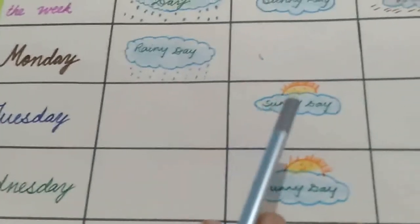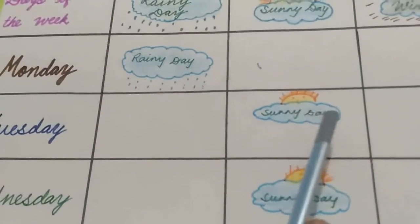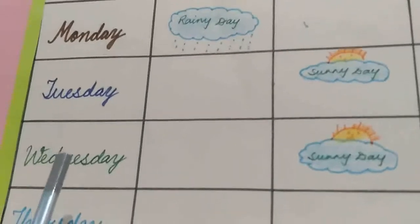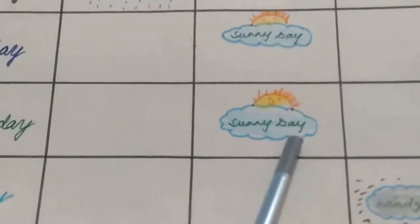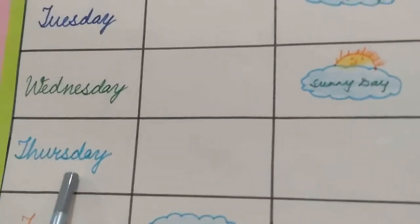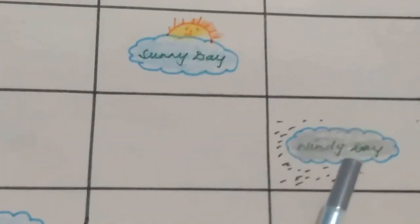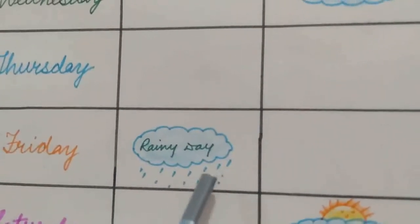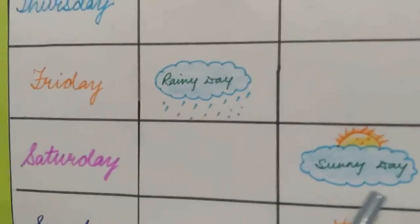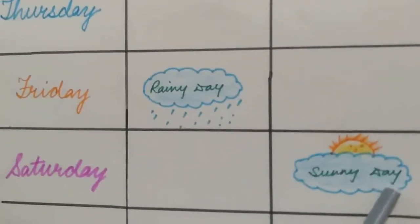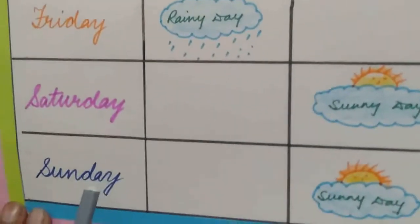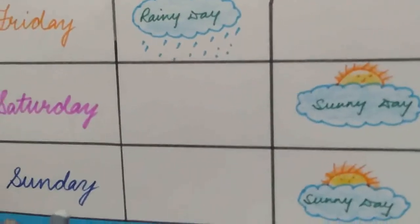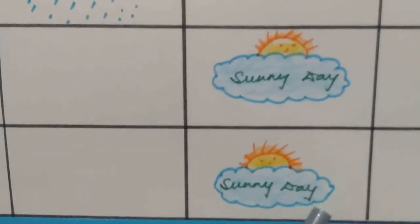Tuesday had a lot of sunshine, so I have written sunny day. Wednesday was again sunny day. On Thursday I have written windy day. On Friday there was a lot of rain, so I have written rainy day. Saturday was sunny day. And on Sunday, again sunny day.